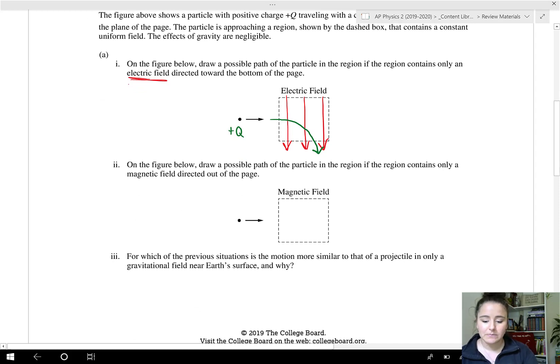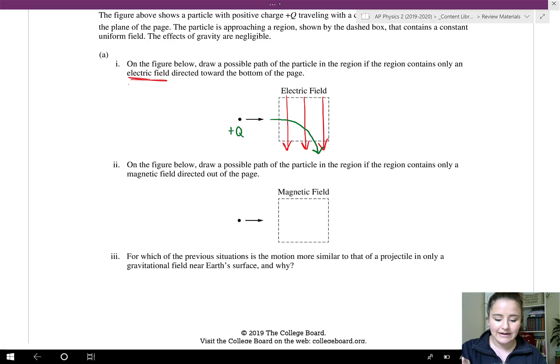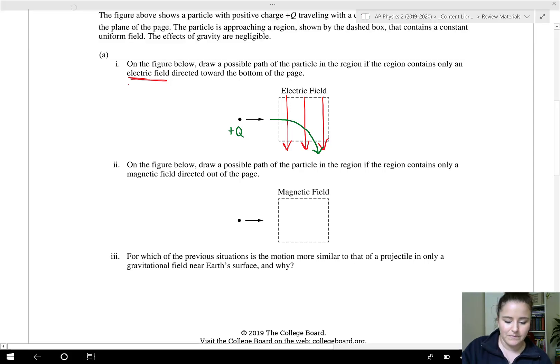On the figure below, draw a possible path of the particle if the region contains only a magnetic field directed out of the page. I'm going to be using blue for the magnetic field. If it's directed out of the page toward us, we signify that with dots.